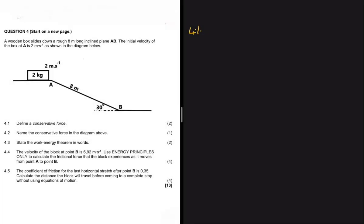A conservative force is a force in which the work done in moving an object between two points is independent of the path taken — that is 4.1. For 4.2, the question asks to name the conservative force in the diagram. In our scope, we have only one conservative force, which is the force of gravity or gravitational force. So the answer for 4.2 is the force of gravity.